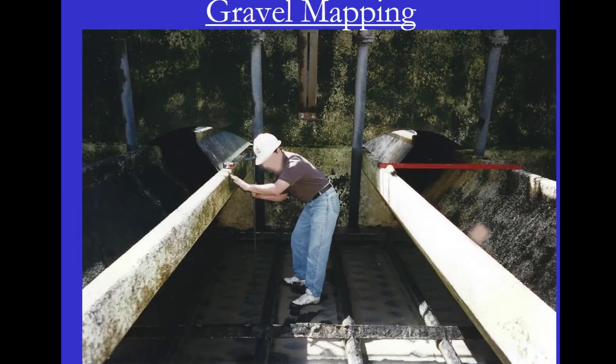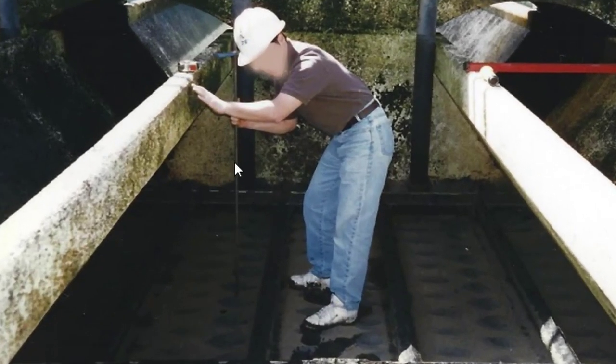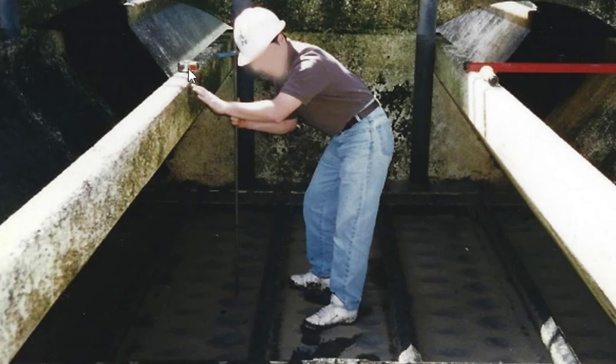The way a gravel mapping tool works — here's one here, which is actually a pin rod from the distribution system. You put the gravel mapping tool into the media and the media makes a certain sound. As it hits the gravel, it makes a different sound — it kind of rings. You grab the mapping tool right at the interface with the media, pull it up, and then with a tape measure, measure the distance. Do this at various locations in the filter to determine how level the gravel is.